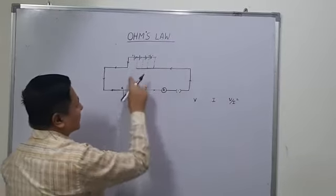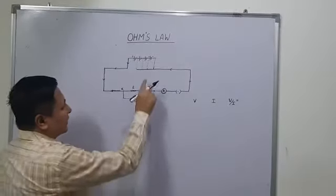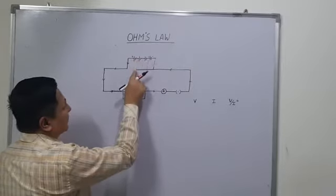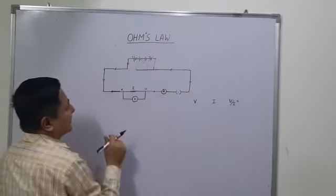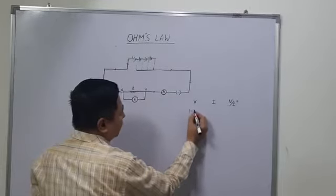When we connect the wire to this side, only one cell is connected. Let's say it has a potential difference of 1.5 volts.